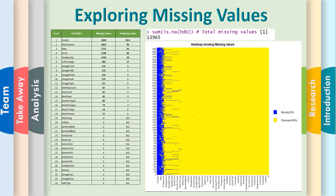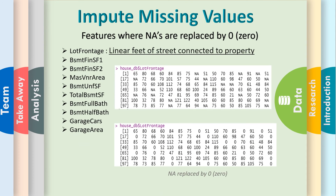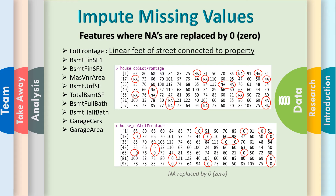We have a total of 13,965 missing values in our dataset. The table shows the missing values by feature, and the heat map shows the ratio of missing values in the dataset. The data cleaning process starts here, including missing values for features where NAs are replaced by zero.